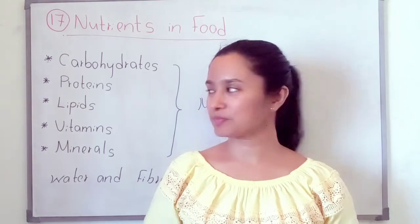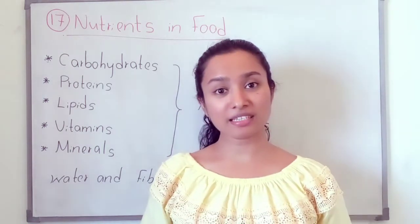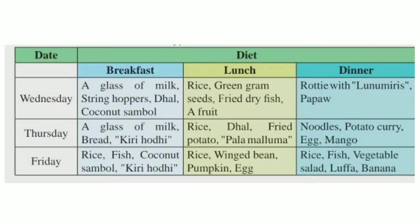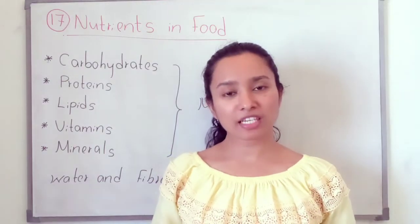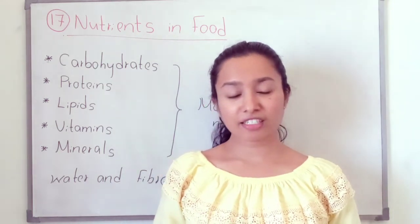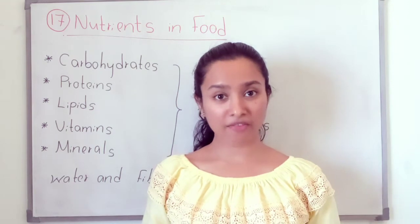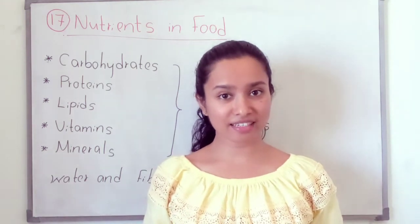Now let's come to the lesson. Food is essential for our existence of life. Turn to page number 86. There is a table which shows the diet taken by a Grade 7 student over 3 days. In our day-to-day life we are taking different types of food for our diet — for breakfast, lunch and dinner.